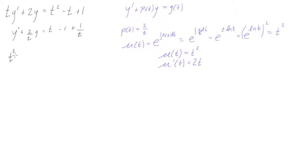So we can write it like this. You have t squared times y prime, plus t squared times 2 over t, y, and now t squared times t is t cubed, and we have minus t squared plus t, right, t squared over t.